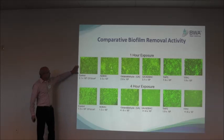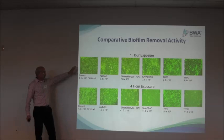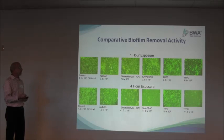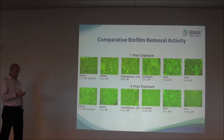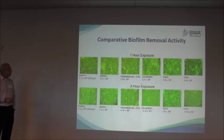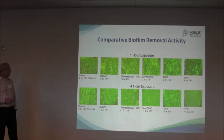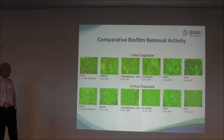Now we're going to look at the biofilm removal effect. What you see here are yellowish-green dots on the surface — those are individual bacteria or bacterial clumps on these coupons. In the control, with exposures of one hour and four hours, you can see that these organisms don't just fall off the surface by themselves; the biofilm is similar in both images.